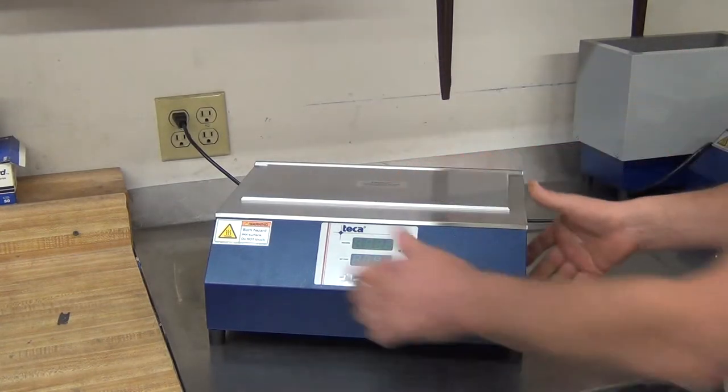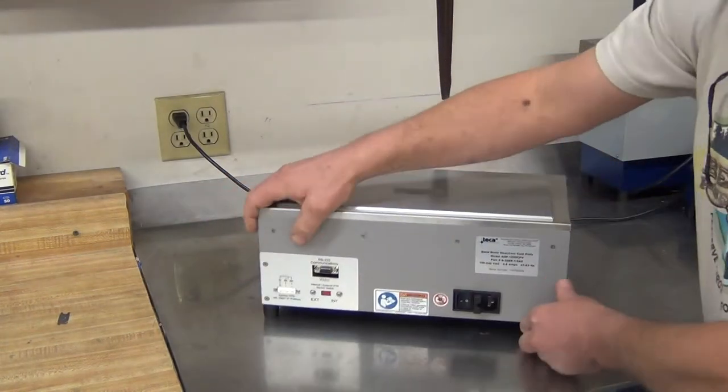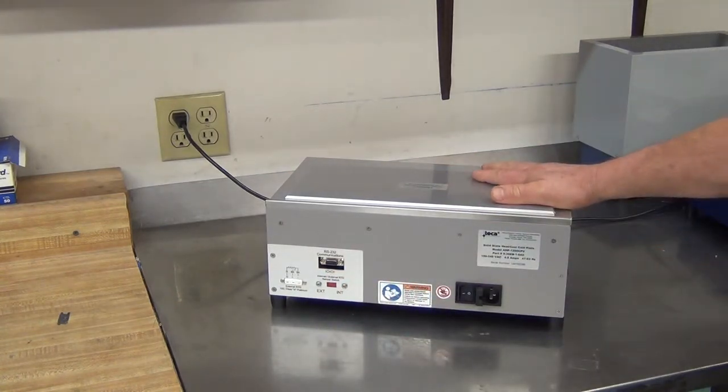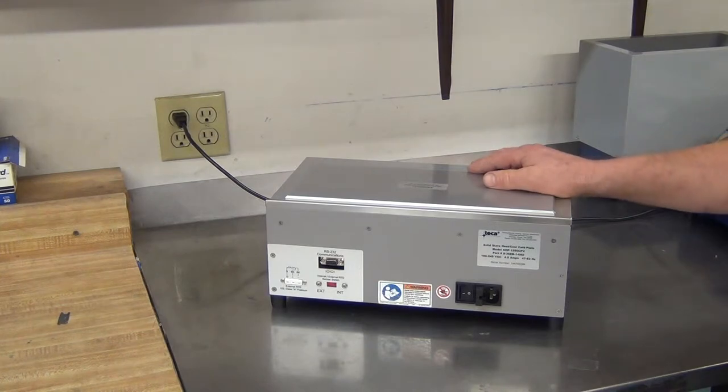Sensor is built into the cold plate or you can go to the back, hook up your RTD probe, flip the switch and now you have remote sensibility.